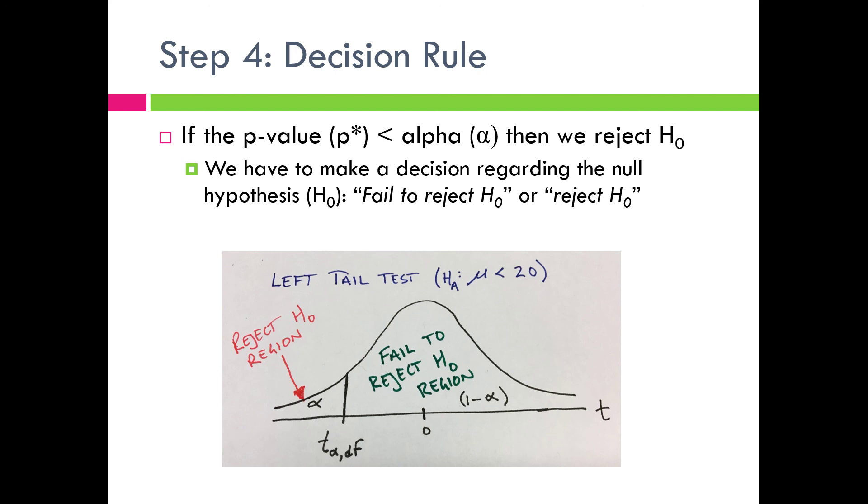There is another way that we can use the decision rule. It's called the critical value approach, and that's where we compare a test statistic to a t-value that we get based on our alpha value and our degrees of freedom. We're not going to focus on the critical value approach in this class. We're going to focus on the p-value approach, which I have written out in this decision rule for step four.